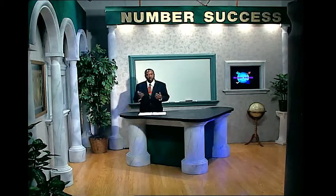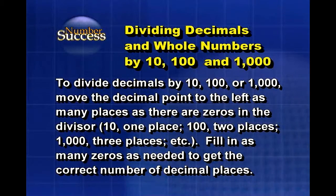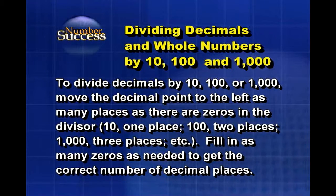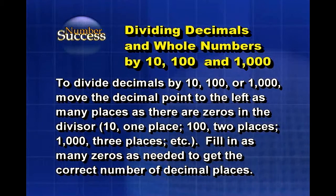Dividing decimals and whole numbers by ten, one hundred, and one thousand. To divide decimals by ten, one hundred, or one thousand, move the decimal point to the left as many places as there are zeros in the divisor. Ten — one place; one hundred — two places; one thousand — three places; etcetera.